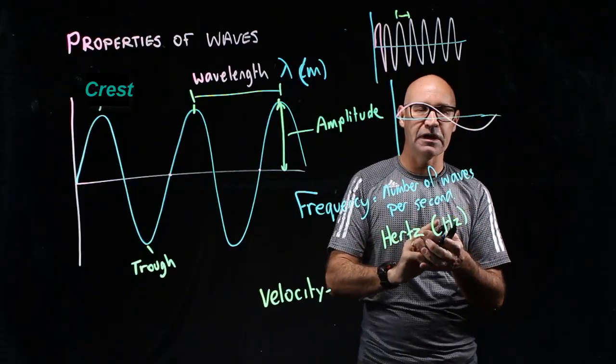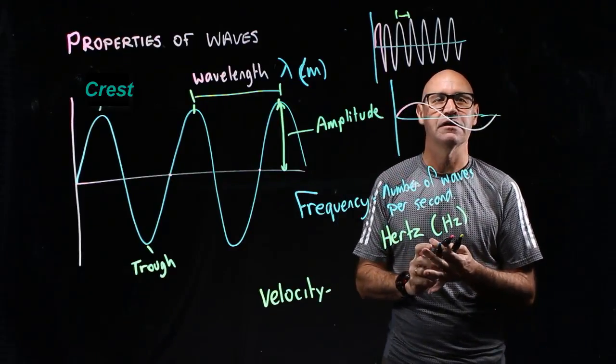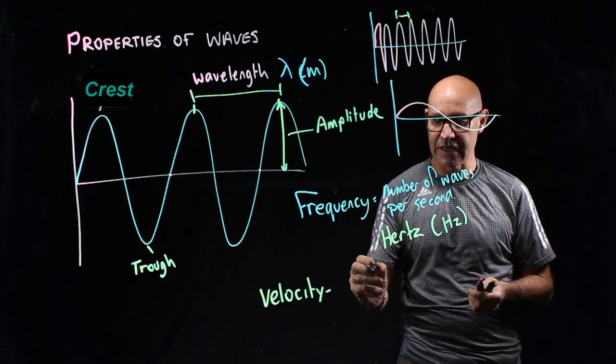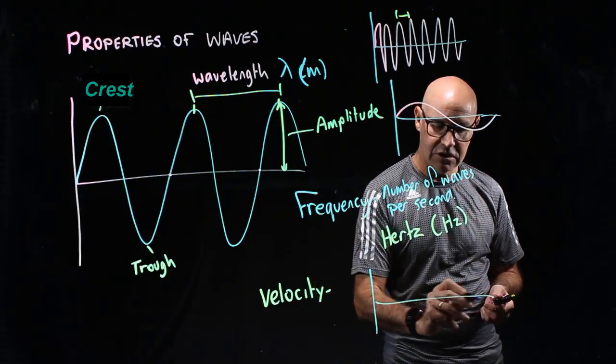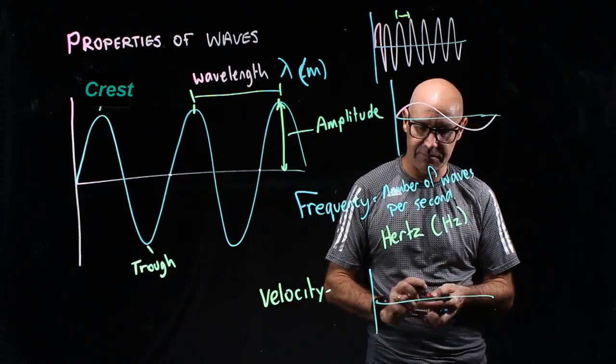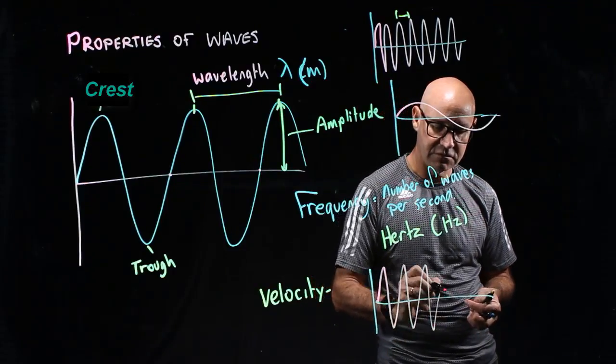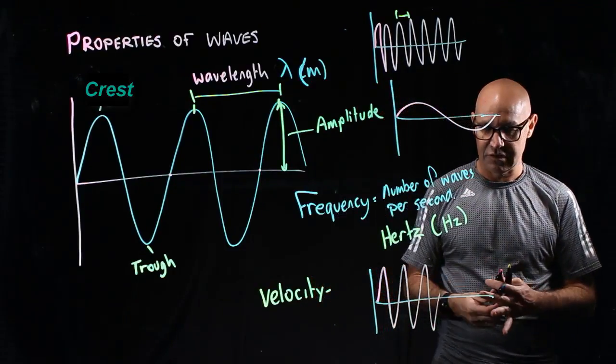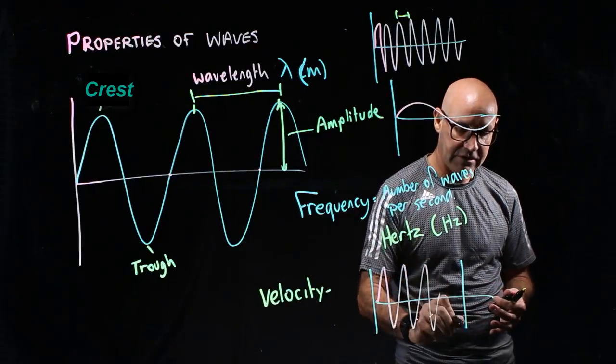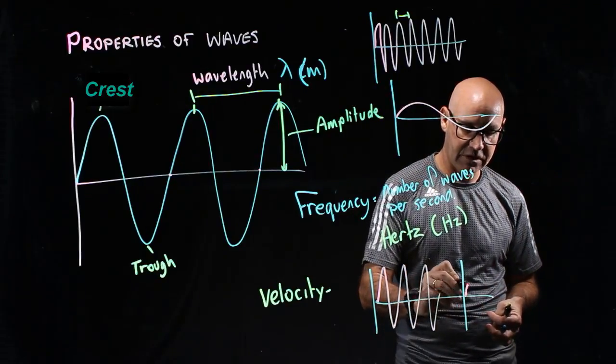And then we can look at a wave that has a high amplitude versus one that has a low amplitude. This is a high amplitude wave, and this is a low amplitude wave.